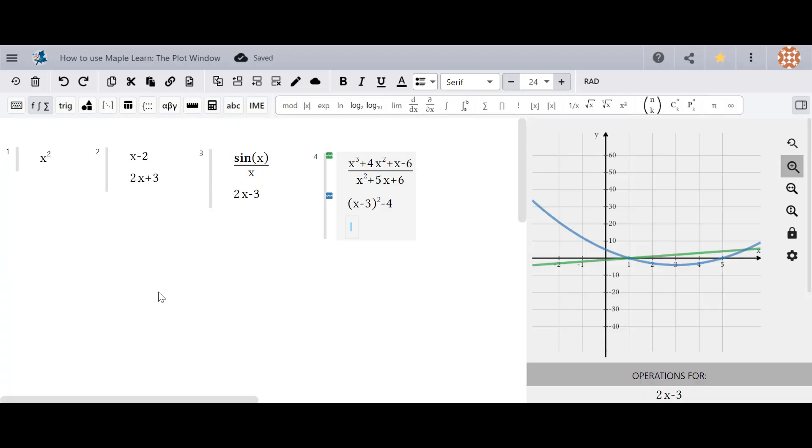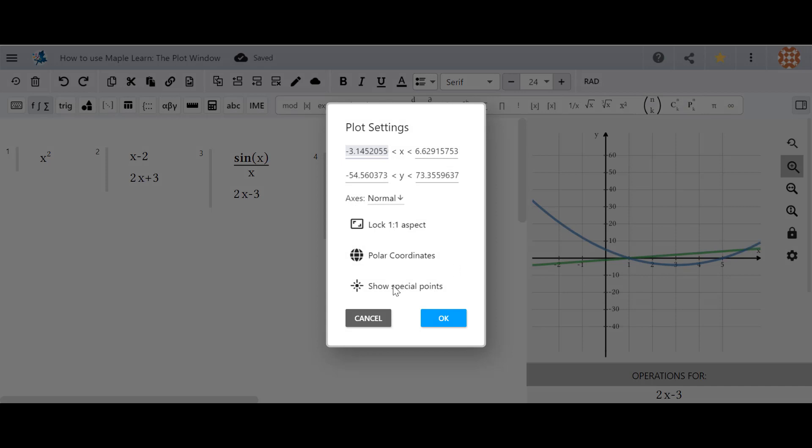Finally, let's talk about the special point feature in MapleLearn. You can get MapleLearn to display special points on your plot by going into the plot settings and selecting show special points.